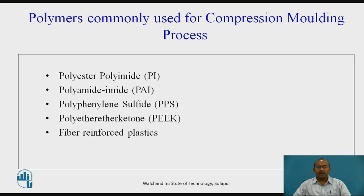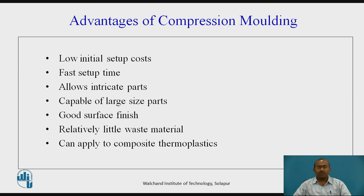Now let us see which polymers are commonly used for compression molding. Both thermoplastic and thermosetting types can be processed under compression molding. Some of these polymers include polyester, polyamide, polyamide-amide, polyphenyl sulfide, polyethylene ether ketone (PEEK), and fiber reinforced plastics. All these polymer materials can be processed into various kinds of parts.